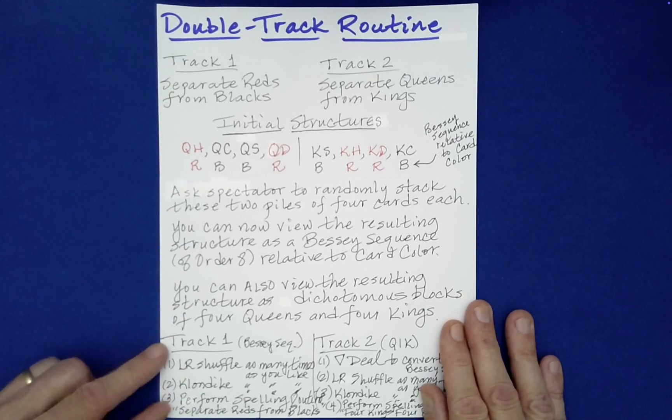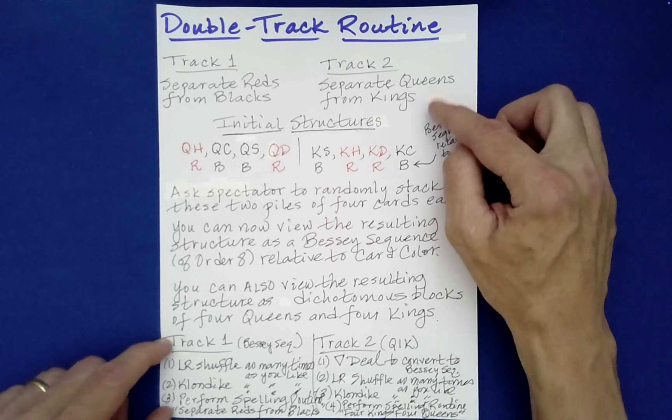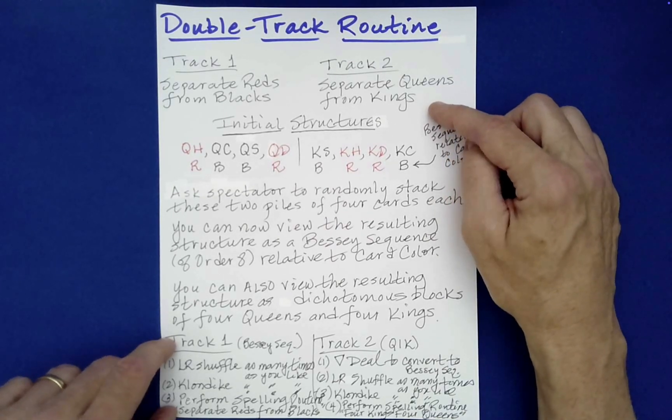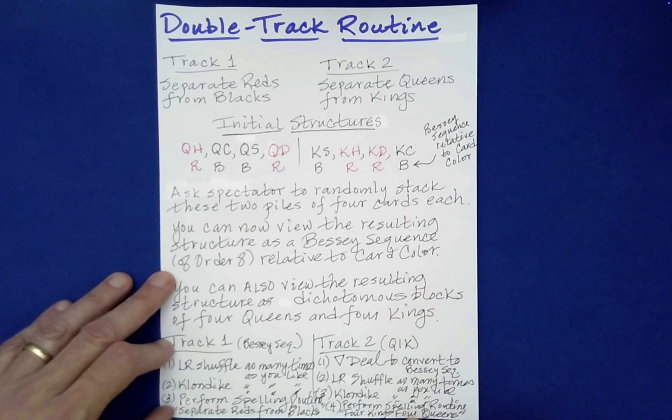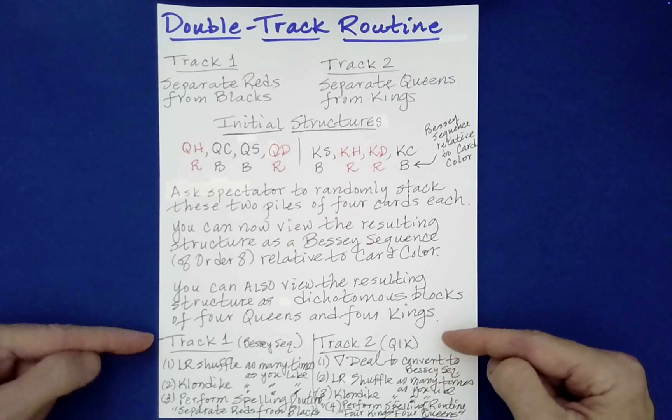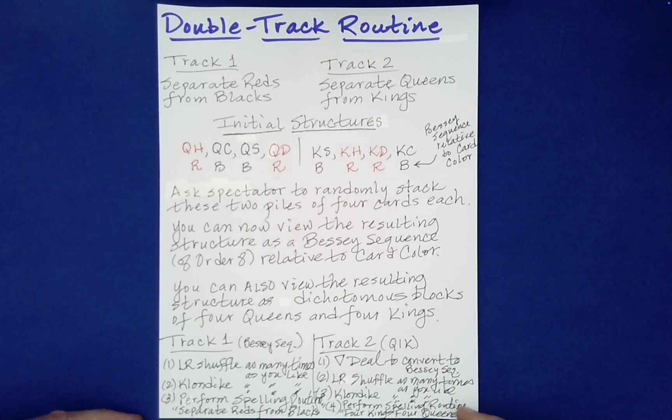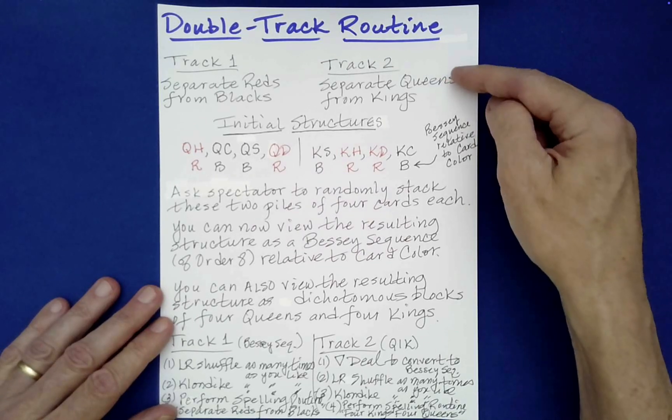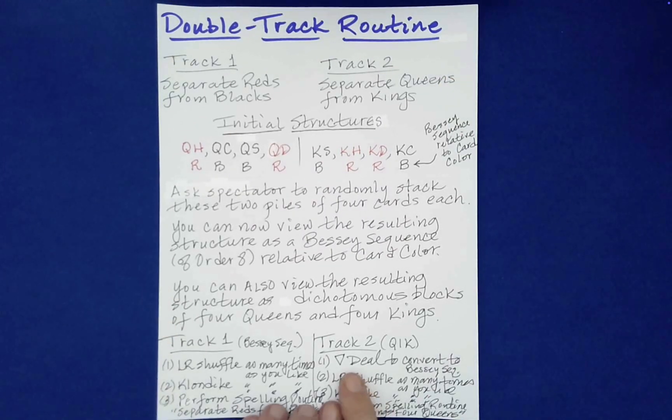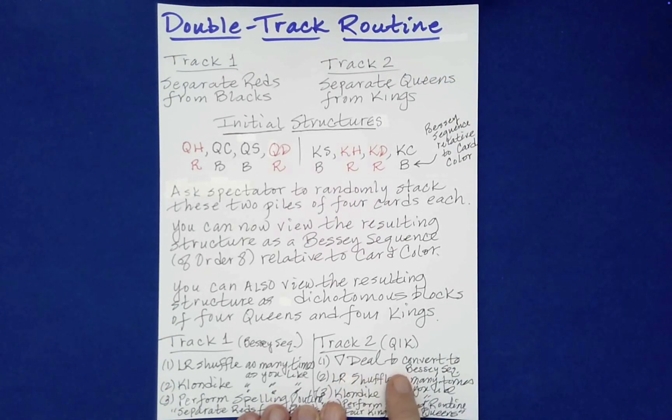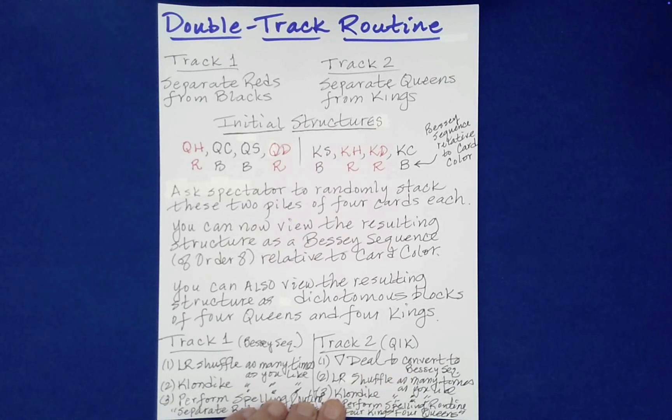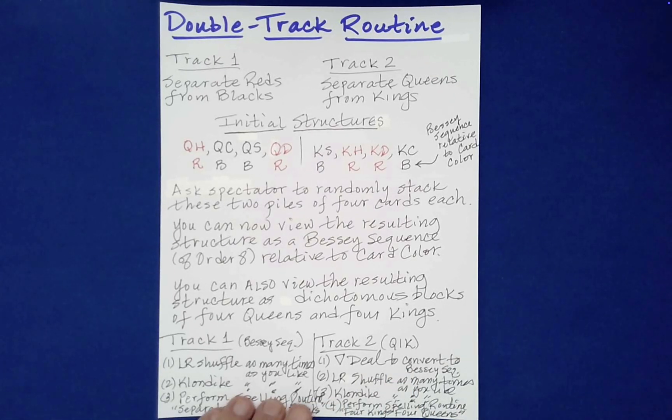Now, depending on what the spectator asks to be separated, if they ask for reds to be separated from blacks, then you're on track one, which is right down here. If they ask for the queens to be separated from the kings, you're on track two right here. And really, the only difference with the procedure is if they choose to separate the queens from the kings, you have that additional triangle deal, which is needed to convert it to a Bessie sequence, which will then protect it from many, many shuffles, but these two shuffles in particular.